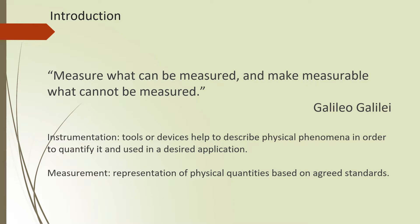We have many examples of instrumentation: a ruler to measure length, a thermostat to measure temperature, and many different kinds of instruments. Both tools and devices are considered instruments. Measurement is just a representation of a physical quantity based on agreed standards. In this course, we're going to focus on physical quantities like pressure, temperature, and level — three main ones — and learn different instruments to measure them.